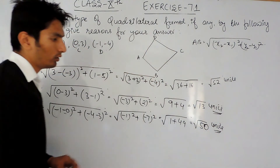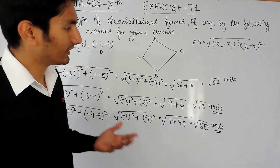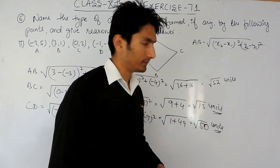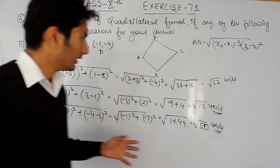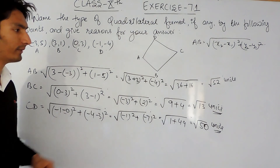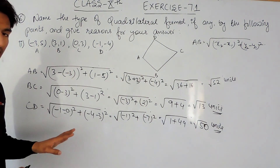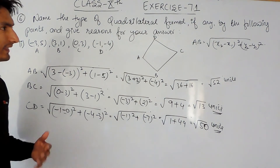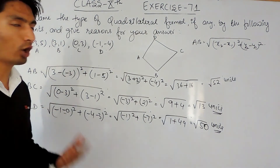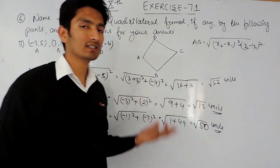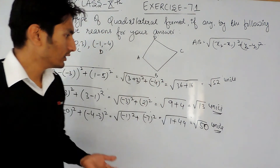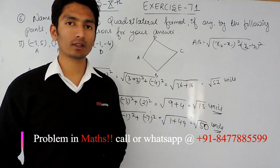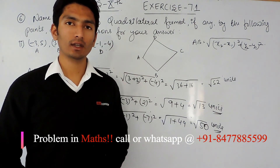Till now one thing is clear: none of the sides are equal. So I don't even need to find the length of the fourth side, because from what we have found so far I can confirm that no sides are equal. That means this is a normal quadrilateral having four sides with no special properties. This is how you solve this particular problem. In the next video we'll solve the last part of the same question. Thank you.